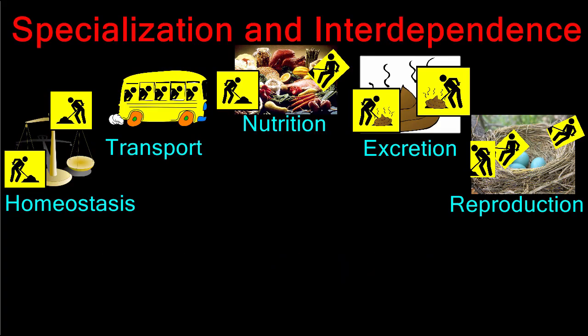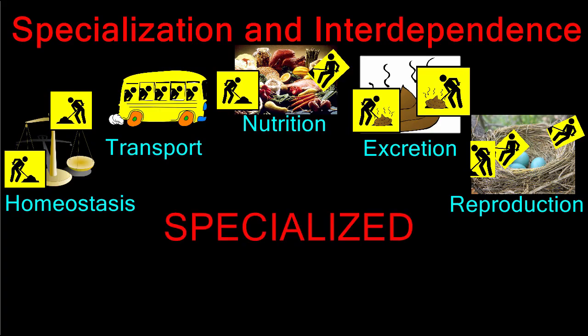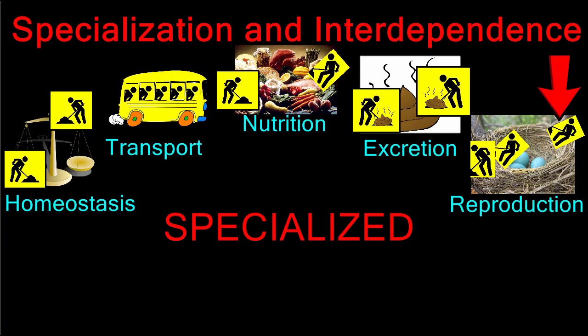Each type of cell in a multicellular organism must become specialized to do their specific task. Cells that are specialized can only complete one task, so they are dependent on the other cells in the organism to complete the other activities of survival.